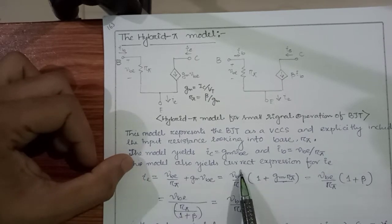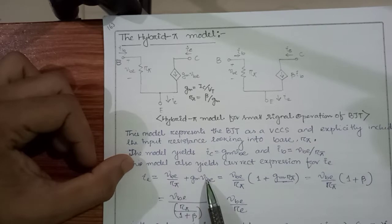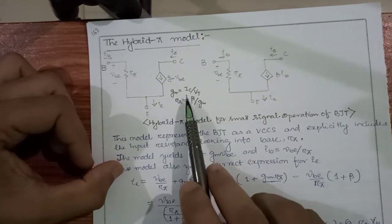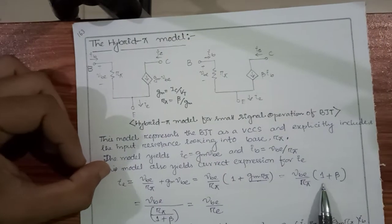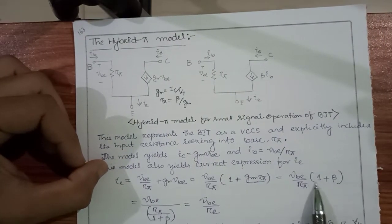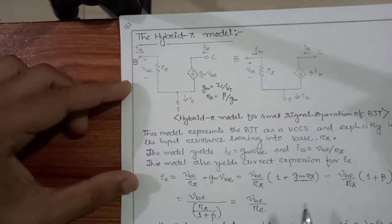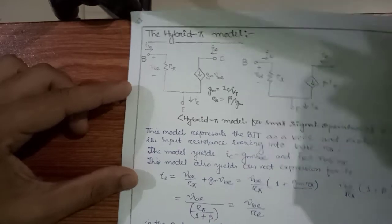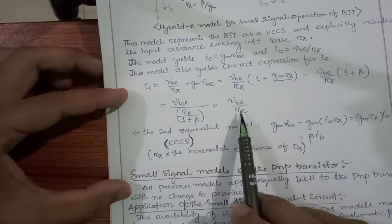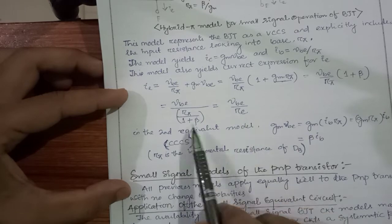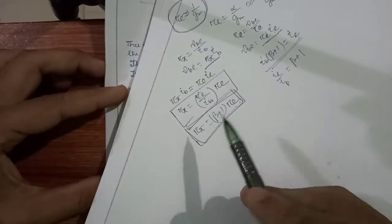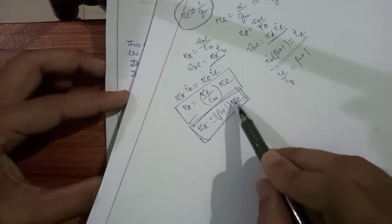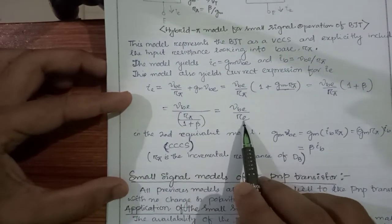Taking V_be / r_pi as common factor from the emitter current expression: I_e = (V_be / r_pi)(1 + G_m·r_pi). Since G_m·r_pi = beta, this becomes (V_be / r_pi)(1 + beta). Taking (1 + beta) to the denominator: I_e = V_be / (r_pi / (1 + beta)). We already know the relation r_pi = R_e × (1 + beta), so r_pi / (1 + beta) = R_e. Therefore I_e = V_be / R_e.